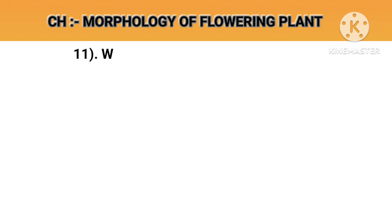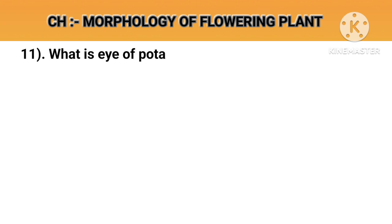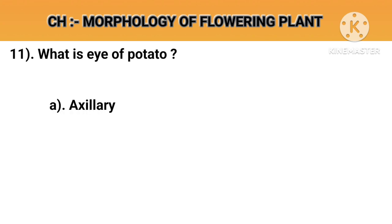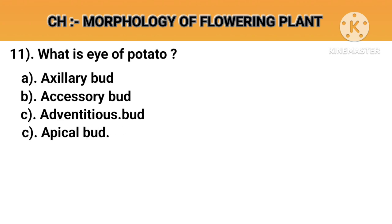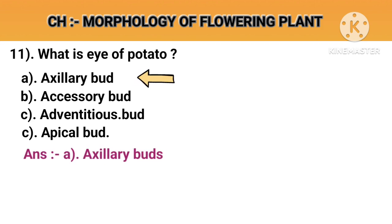Question number 11. What is the eye of potato? Option A: Axillary bud. Option B: Accessory bud. Option C: Adventitious bud. Option D: Apical bud. Answer A: Axillary bud.